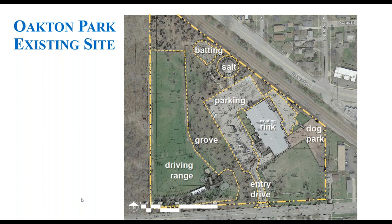This slide orients you to the current site. On the northwest side of Park Ridge, Oakton Park sits north of Oakton Street, south of Bessey Highway, and west of Algonquin, which turns into Riverside Drive to the south. The site currently includes an existing driving range, a grove of beautiful oak trees, entry and parking to the existing ice rink, green space at the front, a dog park, the city's salt dome to the north of the parking lot, and batting cages.